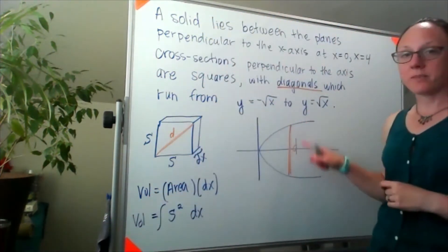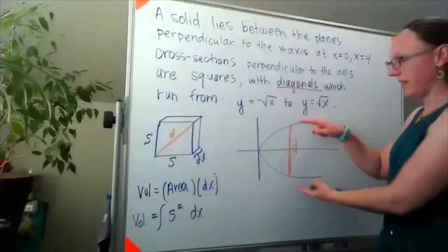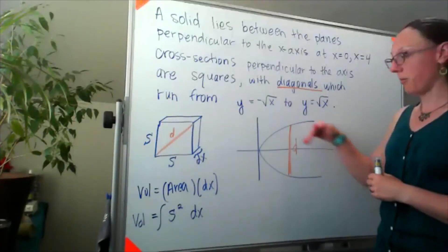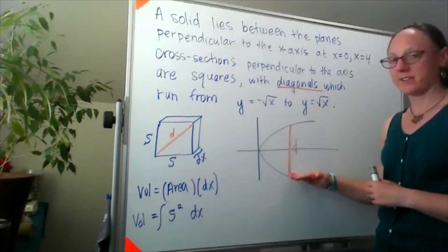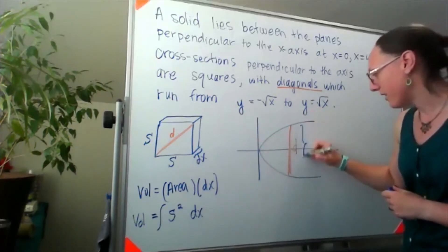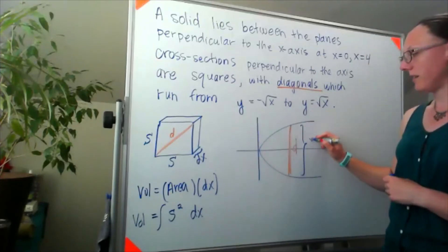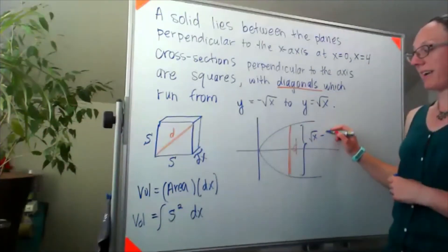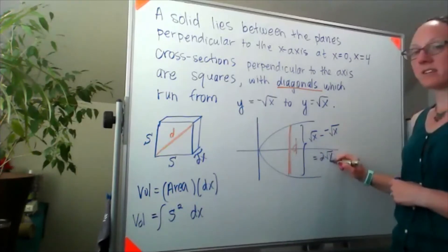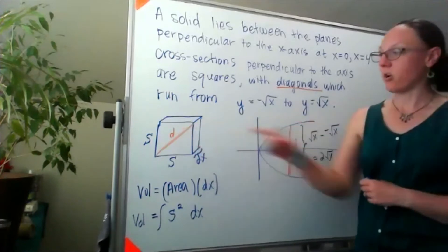Well, in terms of this length, I know that length is coming from our top function minus our bottom function. So this length here would be the square root of x minus negative square root of x, or 2 square root of x. So that's our d over here.